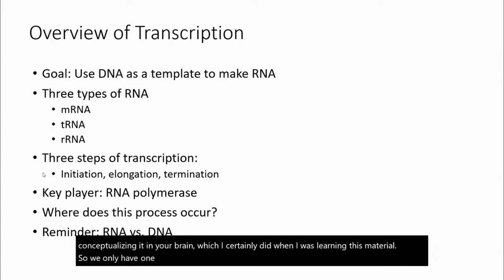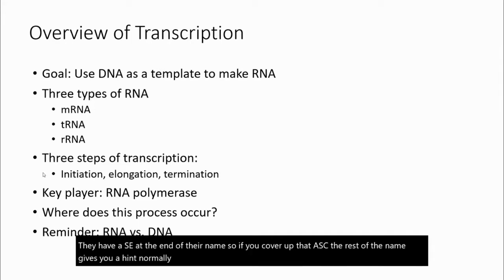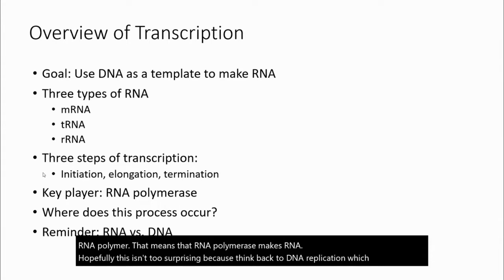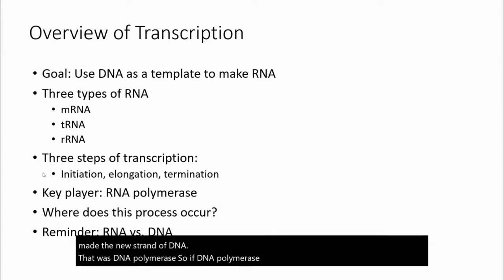We only have one key player in transcription, and that is RNA polymerase. Remember, all enzymes, which are just specialized proteins, have ASE at the end of their name. So if you cover up that ASE, the rest of the name gives you a hint as to what that enzyme does. If you cover up the ASE, you get RNA polymer. That means that RNA polymerase makes RNA. This isn't too surprising because think back to DNA replication. Which molecule made the new strand of DNA? That was DNA polymerase. So if DNA polymerase makes DNA, then RNA polymerase should make RNA.